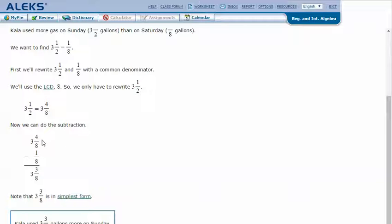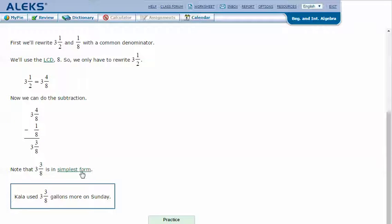Now we can subtract. Three and four-eighths minus one-eighth is three and three-eighths. And three and three-eighths is already in simplest form, so that's my final answer. So Kayla used three and three-eighths gallons more on Sunday. Let's try another one.